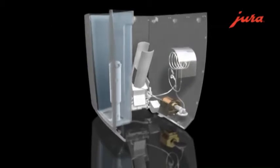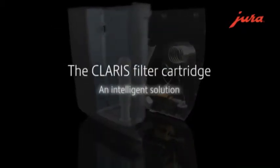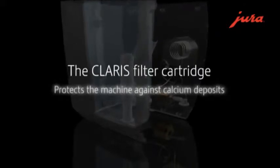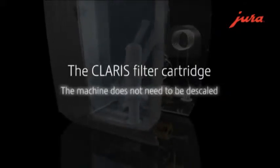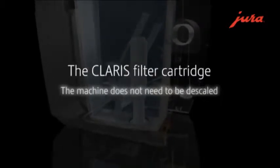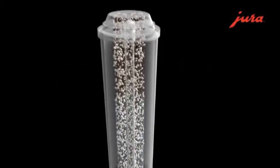Jura offers an intelligent solution. The Claris Plus filter cartridge. This protects the machine against calcium deposits and extends its lifetime. The machine does not need to be descaled. And you are guaranteed consistently high water quality and therefore coffee quality.